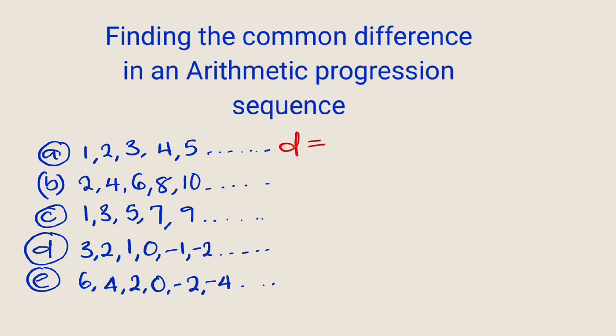Is equal to, let us take a term at random. Let's assume we want to use this one, that is the upper bound. We have five minus the previous one which is four, and this is equal to one. Therefore the common difference in this sequence is said to be one.